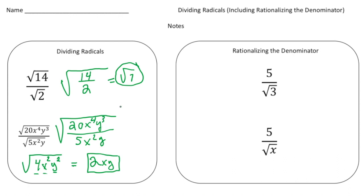Now let's move on to the second important topic: rationalizing the denominator. If you look at the word 'rationalizing,' there's that term 'ratio' — remember, ratios mean fractions. And there's an important rule about fractions: the denominator has to be a number that's rational.